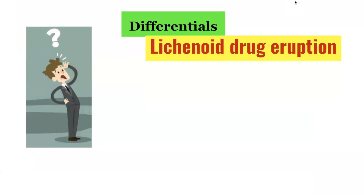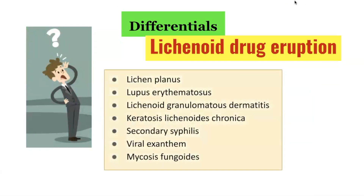What are the differential diagnoses of lichenoid drug eruptions? Lichenoid drug eruptions can mimic a number of other conditions, including lichen planus, lupus erythematosus, lichenoid granulomatous dermatitis, keratosis lichenoides chronica, secondary syphilis, viral exanthem, and mycosis fungoides.